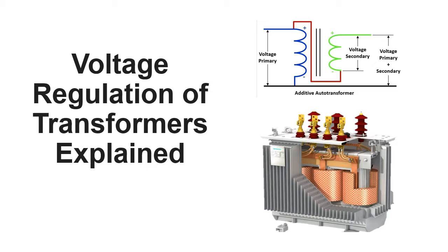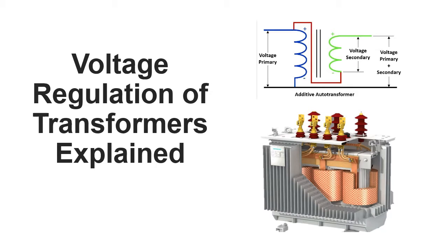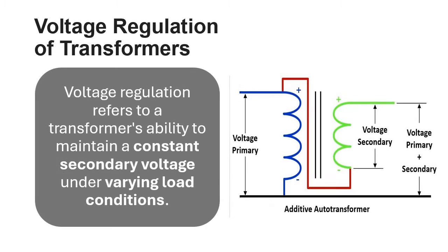Voltage regulation of transformers explained. Voltage regulation refers to a transformer's ability to maintain a constant secondary voltage under varying load conditions.